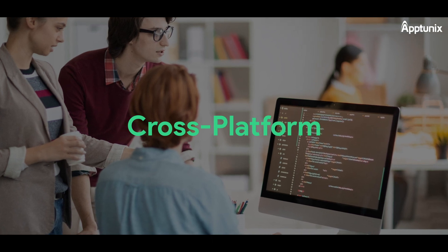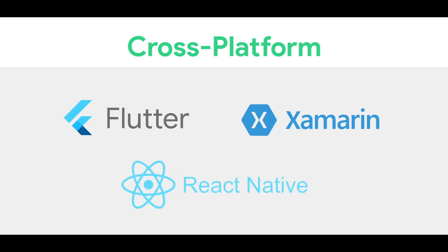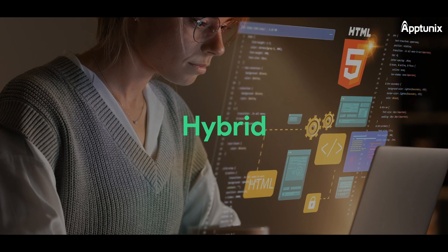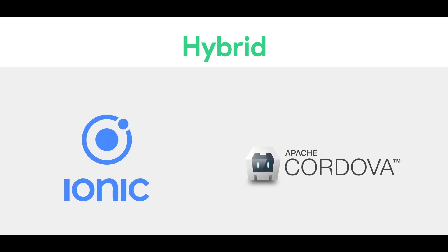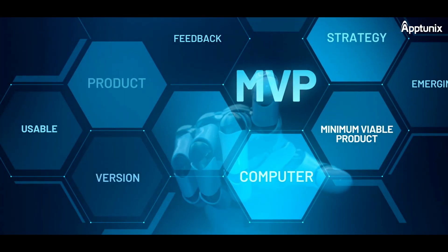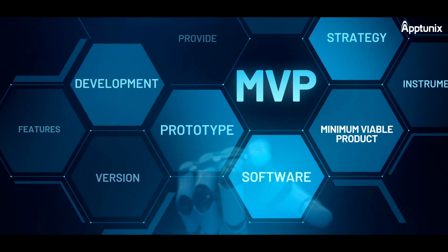Cross-platform development offers lower cost and shorter time to market, utilizing frameworks like Flutter, Xamarin, or React Native. Hybrid development functions across platforms, created using web technologies like HTML5, CSS, and JavaScript, using frameworks like Ionic or Apache Cordova. MVP Development: test the waters with a minimum viable product (MVP) to test the app's core functionality and gather feedback.